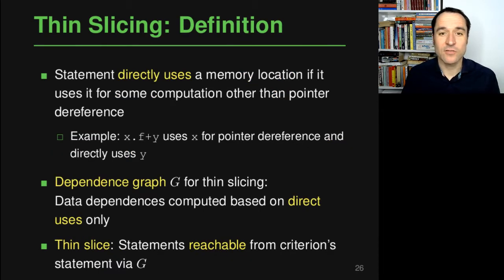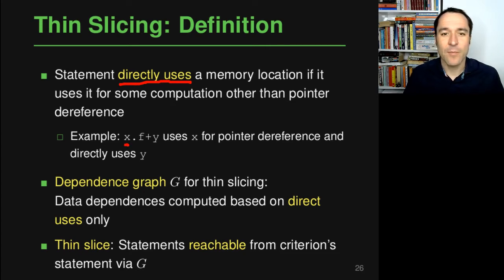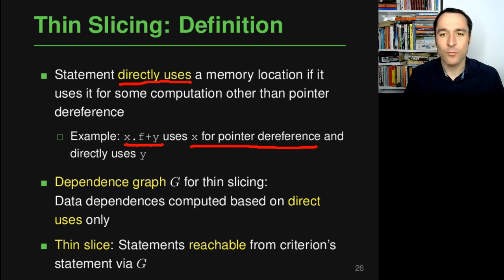Here is the definition of how thin slicing computes a slice. It relies on the idea of directly using a memory location. A statement is said to directly use a particular memory location if it uses that memory location for some computation that is not a pointer dereference. For example, in an expression that looks up field f of x and adds it to variable y, x is only used for a pointer dereference, so this statement is not directly using x but is directly using y.